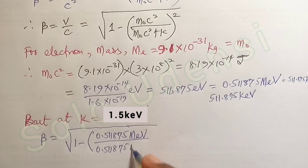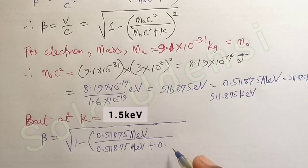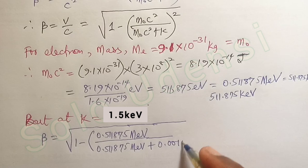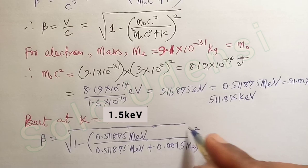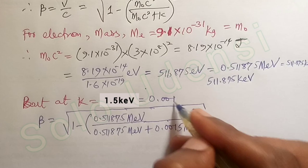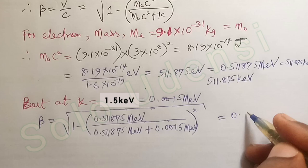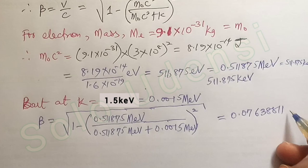Since we are working in mega electron volts, we convert the kinetic energy of 1.5 keV to 0.0015 MeV. Doing the math, we get beta equal to 0.0763881167. That is the speed parameter.